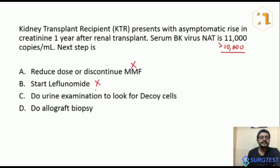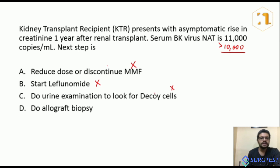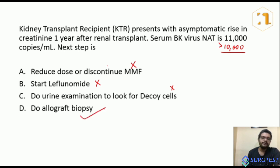Option B — leflunomide — is not mentioned in any guidelines for treatment of BK virus nephropathy, though it is increasingly studied. Option C — urine examination for decoy cells — is a first step in resource-limited settings using phase contrast microscopy, but it is not the answer here. The correct answer is D — do allograft biopsy — to confirm the diagnosis of BK virus nephropathy before proceeding to treatment.